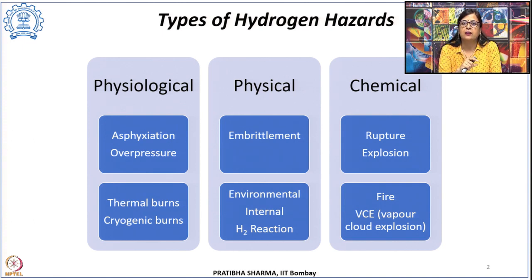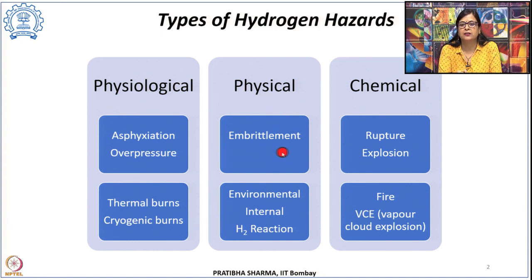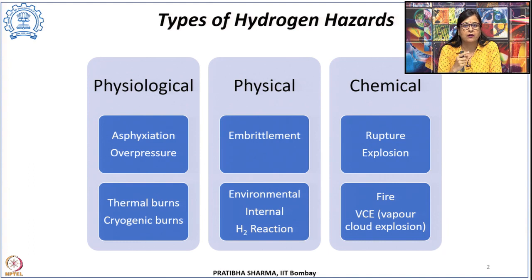There can be cryogenic burns when the skin comes in contact with cold or cryogenic fluids, leading to cryogenic burns, frostbite, or even hypothermia. There could be physical hazards, which are primarily because of embrittlement — the change in mechanical properties that can lead to failure, rupture, or leakage from different materials. There could also be chemical hazards because of chemical reactions with the material, or oxidation and combustion of the hydrogen-air mixture leading to fire, tank rupture, or vapor cloud explosions.